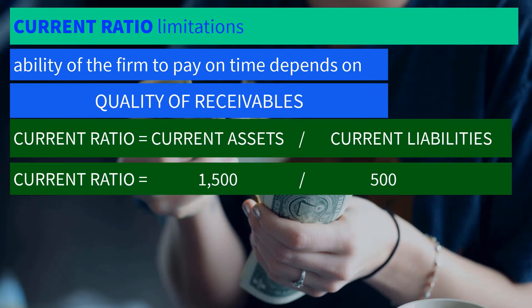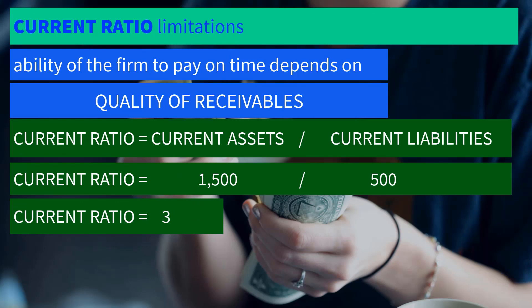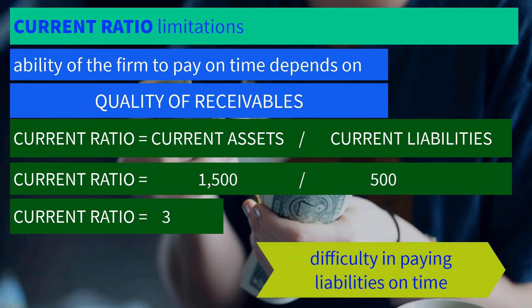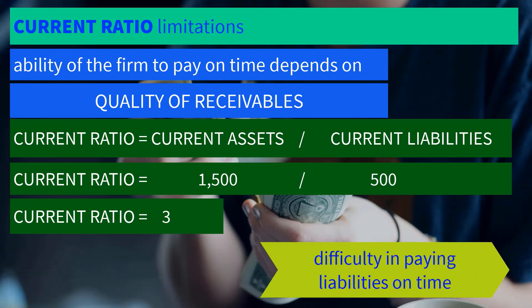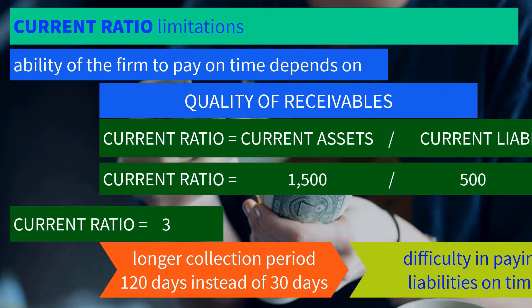A company with a current ratio of 3 may end up having difficulty paying on time if it takes longer — like 120 days instead of 30 days — to collect the accounts receivable.